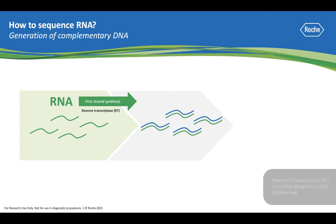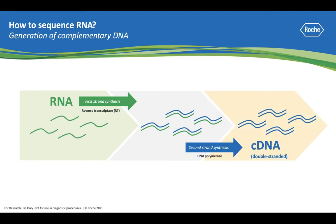The generation of cDNA is initiated by using reverse transcriptase enzyme, which is an RNA-dependent DNA polymerase, and priming to form the first strand of cDNA. The second strand is then synthesized through the use of DNA polymerase to generate the double-stranded cDNA.